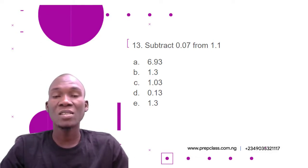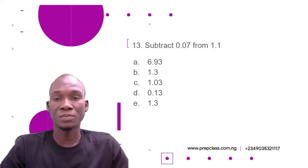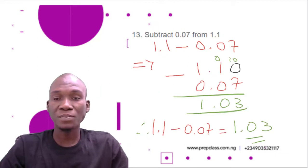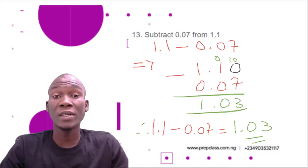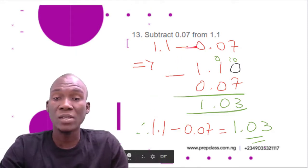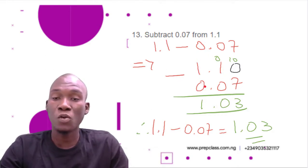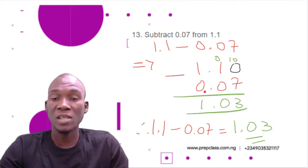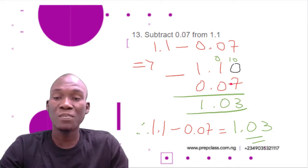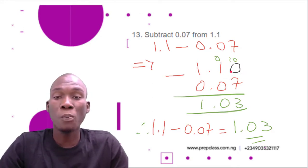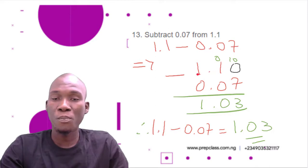The options are: A) 6.93, B) 1.3, C) 1.03, D) 0.13, E) 1.3. This is just a simple subtraction. To subtract 0.07 from 1.1 simply means we have 1.1 minus 0.07. We write it out with the decimal points aligned under each other: 1.10 minus 0.07. Since 0.07 has two digits after the decimal point, we add a zero after 1.1 to balance it, giving us 1.10 minus 0.07.